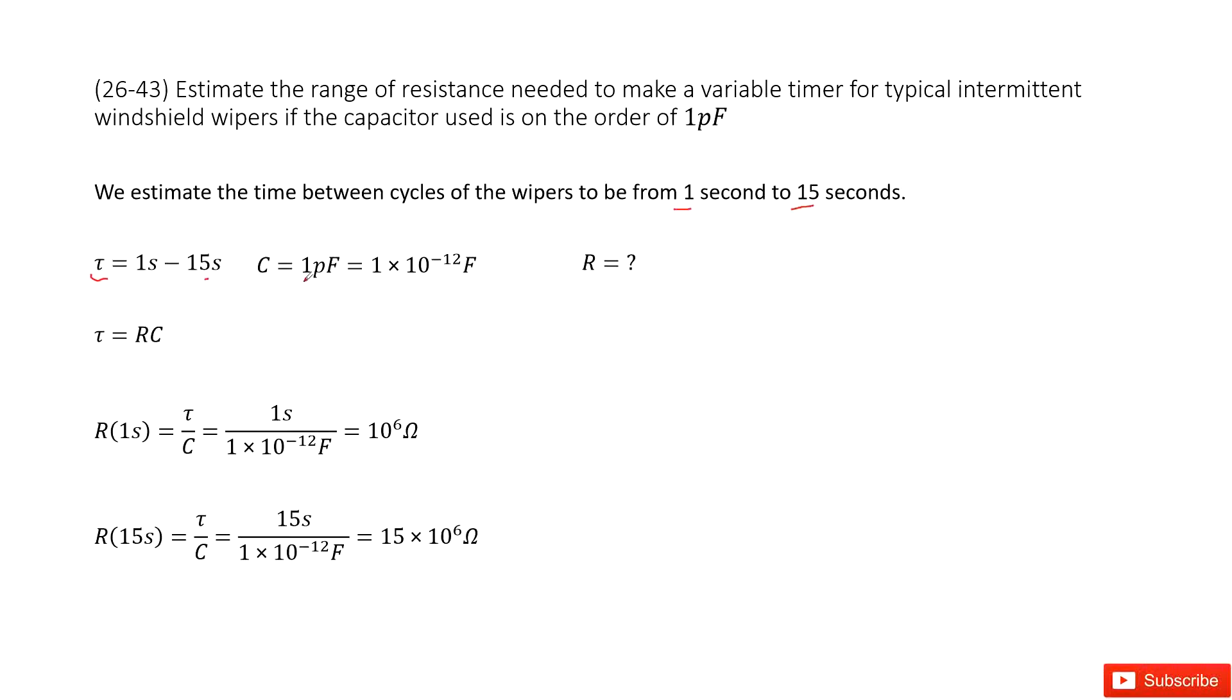The capacitor is given as 1 picofarad and we need to find the resistance R. The time constant in the RC circuit equals R times C.